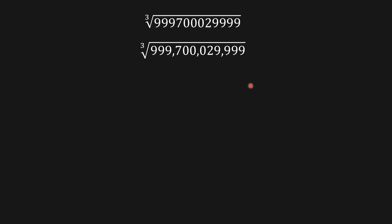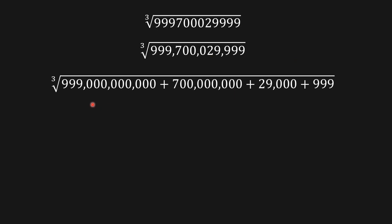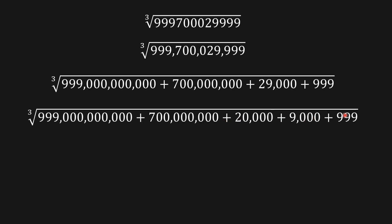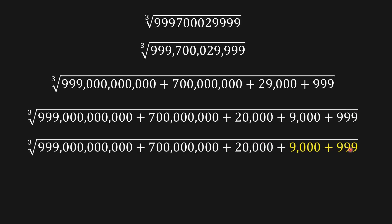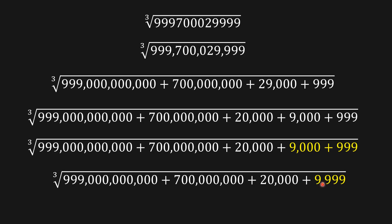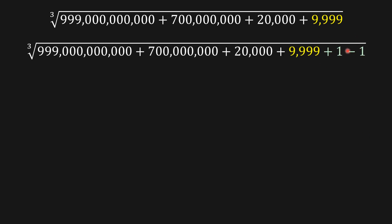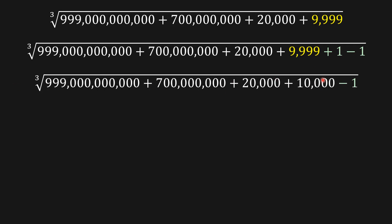So I'm going to write this number out. We have 999,700,029,999. Now I'm going to split twenty-nine thousand into twenty thousand plus nine thousand. Then I add those terms together and get nine thousand nine hundred and ninety-nine. From here I'm going to add one and subtract one so that I get ten thousand.